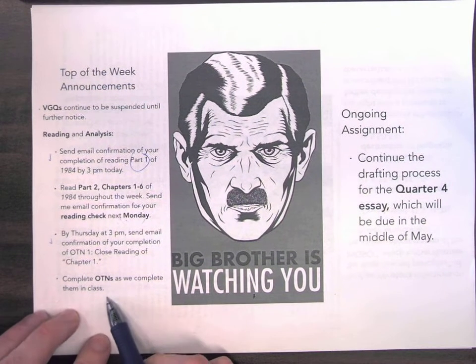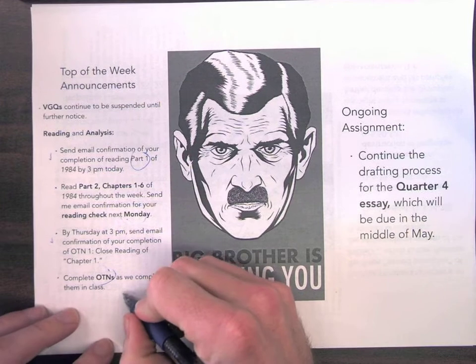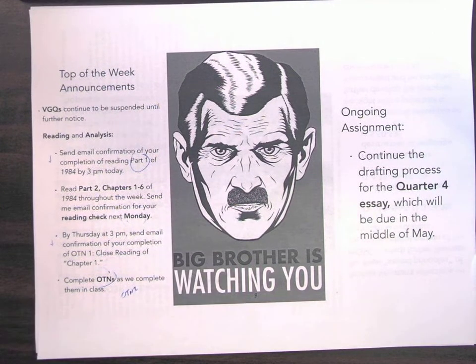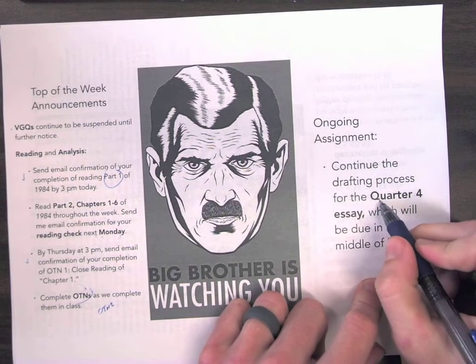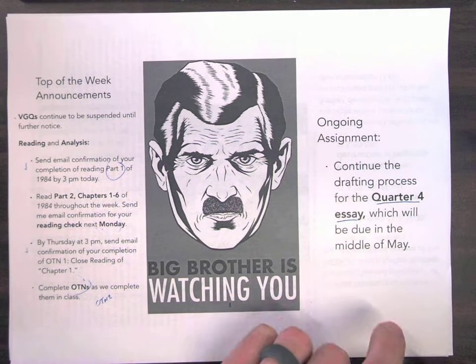And then aside from that, you just need to continue working on our OTNs as we complete them in class. Today we're going to begin working on OTN 2 together. So aside from all that, you have a Quarter 4 essay, which is going to be due in the middle of May, about one month from now.